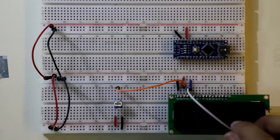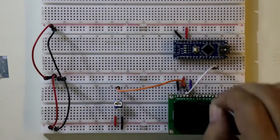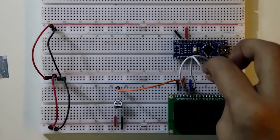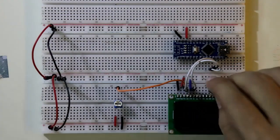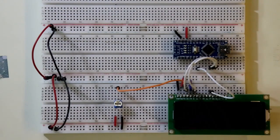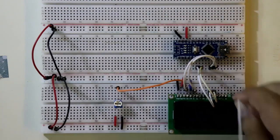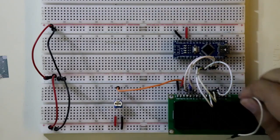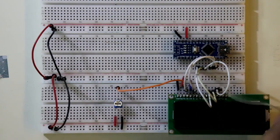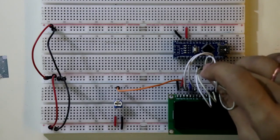RS is connected to D9. E to the D8. D4 of display is connected to D4 of Arduino. D5 to the D5, D6 to the D6, and D7 to the D7.